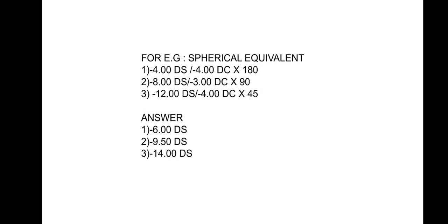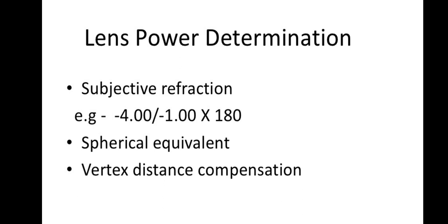For −12.00 DS / −4.00 DC × 45°, half the cylinder is 2, so −12 + (−2) = −14.00 DS. The spherical equivalent of this last prescription is therefore −14.00 D spherical.